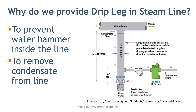Why do we provide a drip leg in a steam line? There is a chance of steam condensation inside the steam line. If you do not remove this condensate from the line, it will create water hammer inside the line and damage the piping system. To avoid this, you must remove the condensate continuously from the system. A drip leg is provided to remove the condensate when there is a rise in the piping along the flow direction.